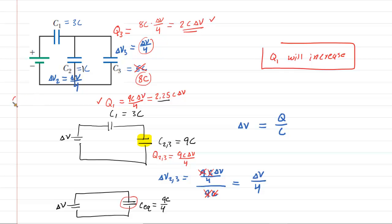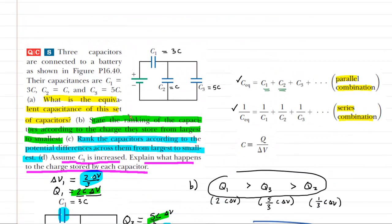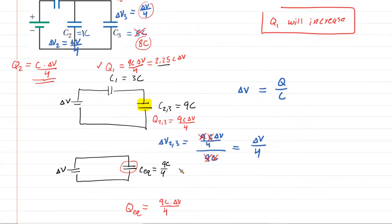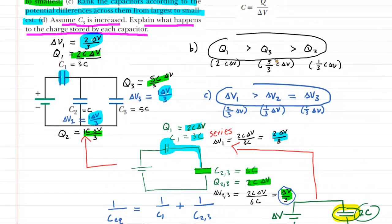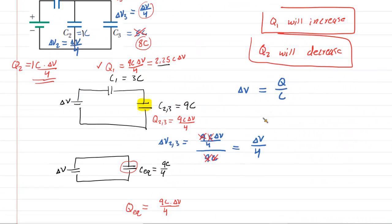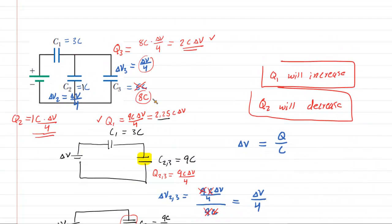And Q2 equals 1C times delta V/4, giving C·delta V/4. Comparing to the originals: Q2 was originally 1/3 C·delta V, and it is now 1/4 C·delta V — so Q2 will decrease. Q3 was originally 5/3 C·delta V, and it is now 2C·delta V — so Q3 will increase. Those are the correct answers to part D.